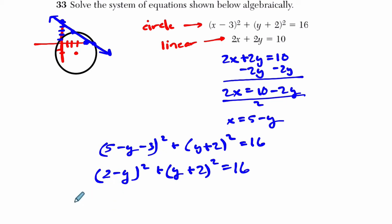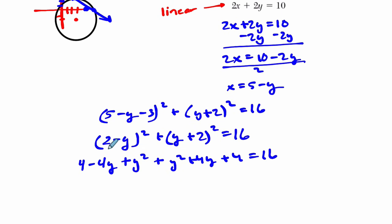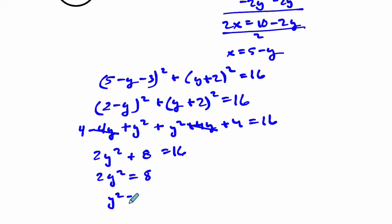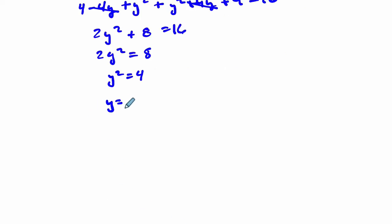What's 2 minus Y times itself? Well, it's 2 times 2, which is 4. And then it's going to be 2 times negative Y twice. So minus 4Y and then plus Y squared. And then over here, we get plus Y squared plus 4Y plus 4 equals 16. And then we just start combining things. All I did there was distribute. Y squared plus Y squared is 2Y squared. Negative 4Y plus 4Y, those cancel out. And then 4 and 4 is 8. So 2Y squared plus 8 equals 16. Now we solve for Y squared. Subtract 8 on both sides. 2Y squared equals 8. Divide by 2 on both sides. So Y squared is 4. Take the square root of both sides. So Y is plus or minus 2, the positive or negative square root of 4. And then solve for both cases.